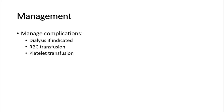Management also involves treating complications. Dialysis is indicated if there is uncorrected renal insufficiency. Red blood cell transfusion can be given in severe cases, and platelet transfusion can be given in cases of active hemorrhage — though platelet transfusion is not usually given unless in active hemorrhage, because it might worsen the thrombotic microangiopathy.